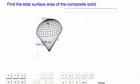Find the total surface area of the composite solid. This is an ice cream cone, right? You have a hemisphere on top of a cone.